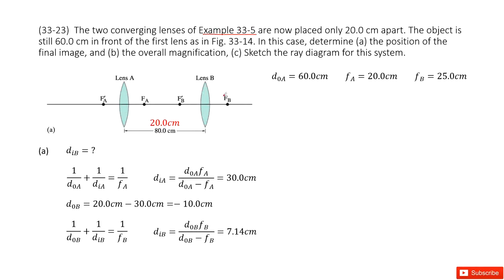As this one given quantity in example 5, we can see we know the two focal lengths, f_A and f_B. And we also know the object distance for A. We call it d_OA is 60 cm.